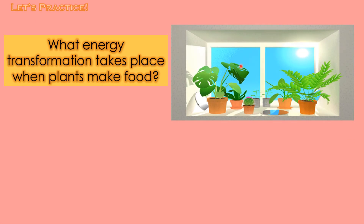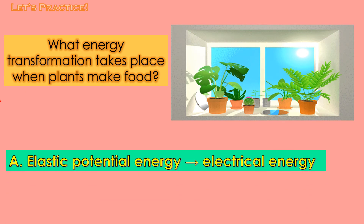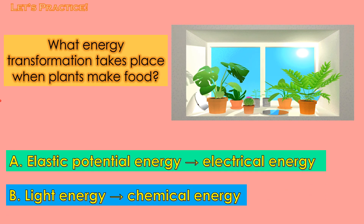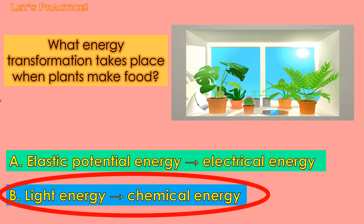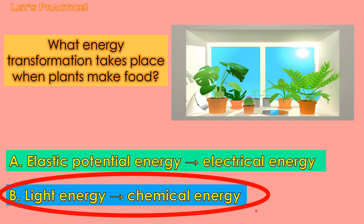Look at this one — they are plants. What energy transformation takes place when plants make food? Is it A or is it B? Yes, you are correct, it's letter B. Let's read: light energy transforms into chemical energy. Great.